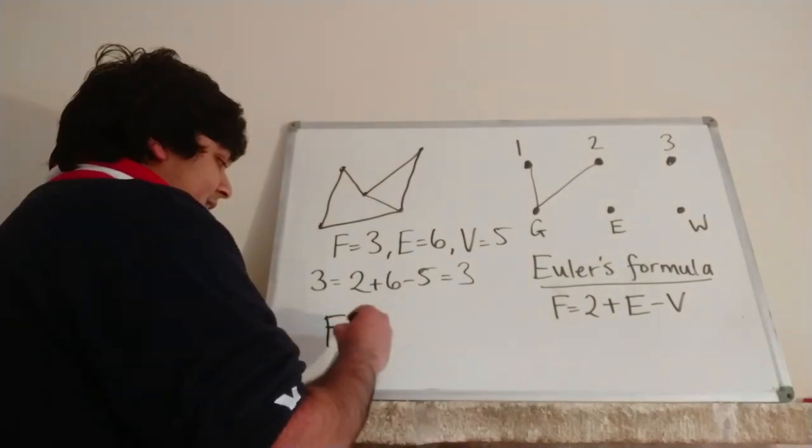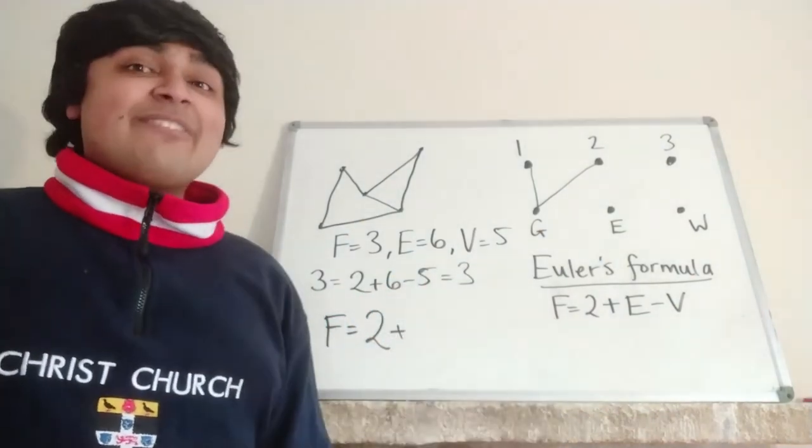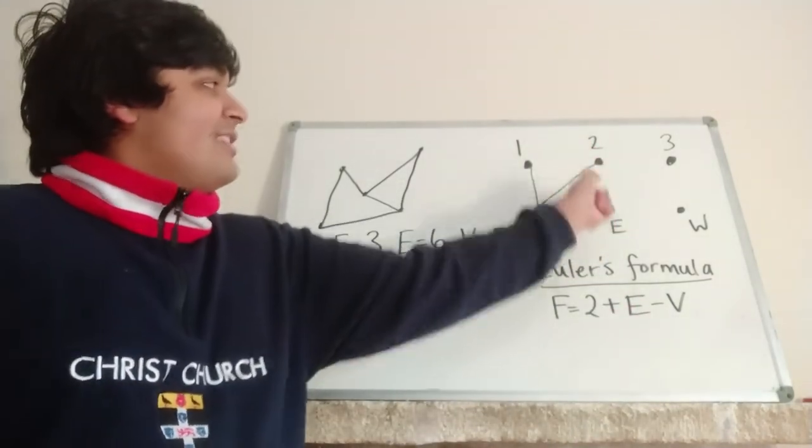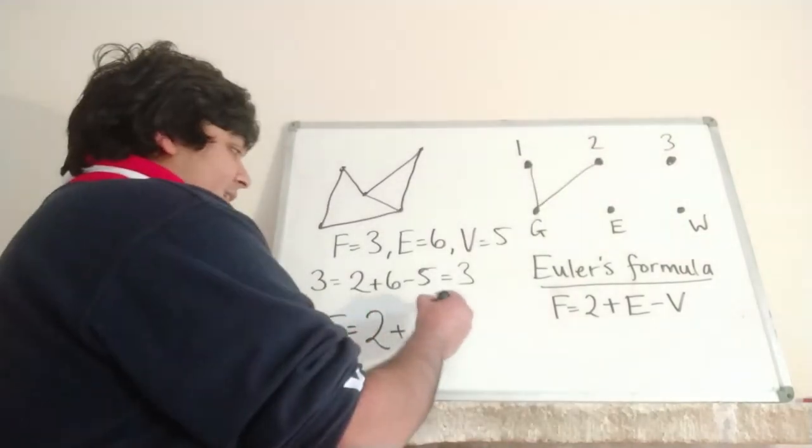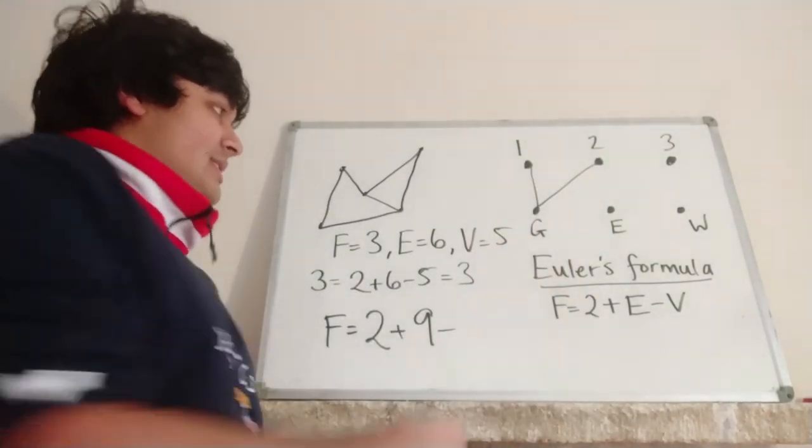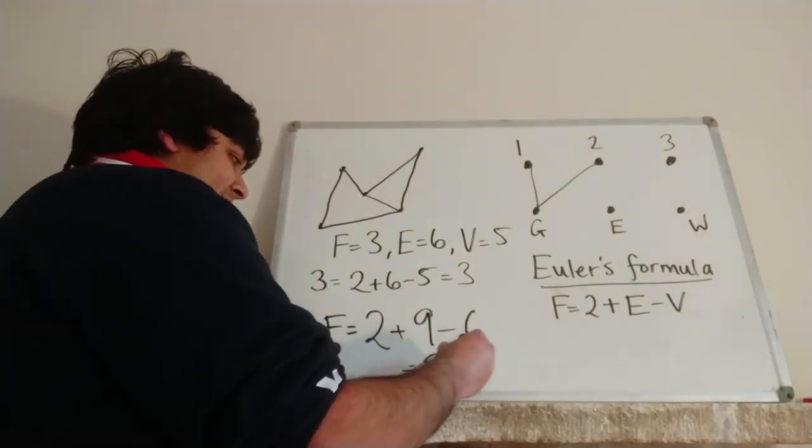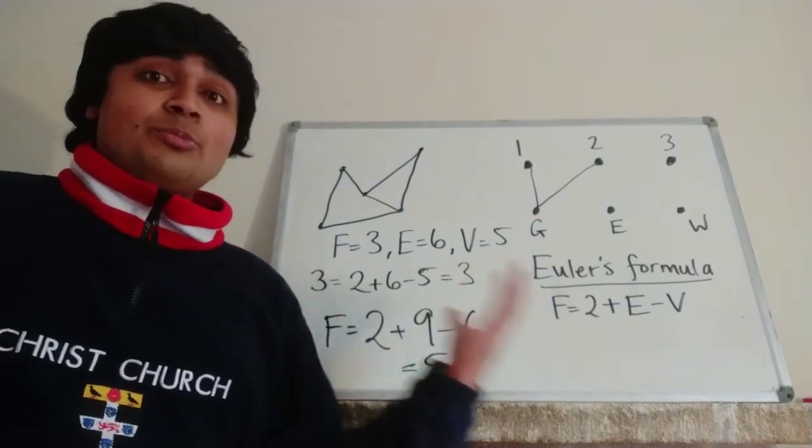If we just plug in this formula here, f is going to equal two plus the number of edges. Well, the number of edges we would have if it were possible would be one, two, three, one, two, three, one, two, three, so nine in total. So two plus nine minus the number of vertices, which is six. So two plus nine minus six. And if you compute this, it's five. So the number of faces we'd expect to have would be five.